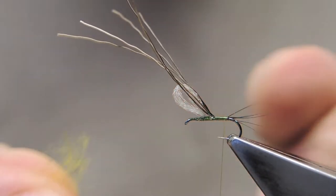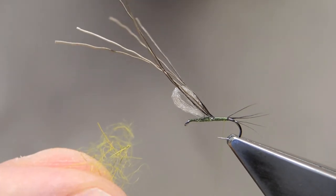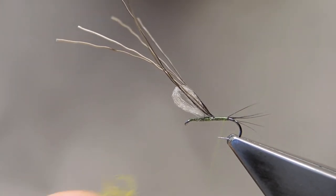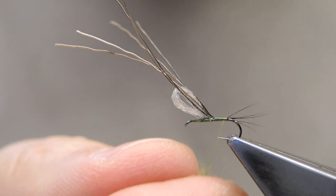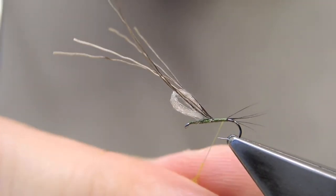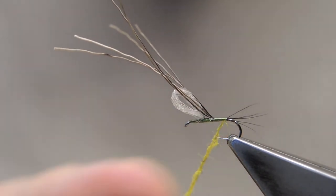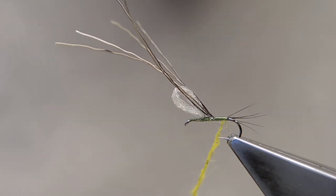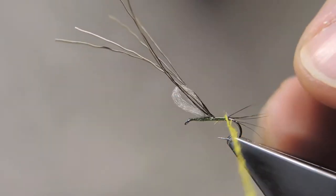For the body, get some olive dubbing. I use Argentinian hair because I like the texture, but any kind of dubbing really will do to make a slender body.